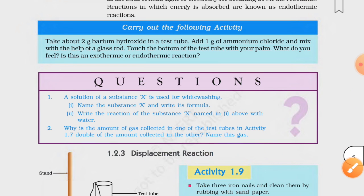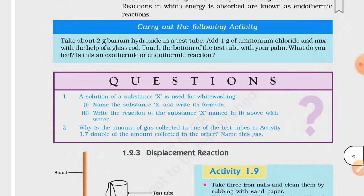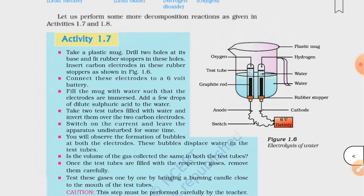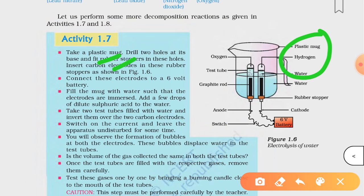Now moving to the second one. Why is the amount of gas collected in one of the test tubes in activity 1.7 double the amount collected in the other? Name this gas. The activity which we are talking about is this one. You must remember the electrolysis of water. During electrolysis of water, the hydrogen gas which collects over cathode is double in amount than the oxygen gas which collects over anode.